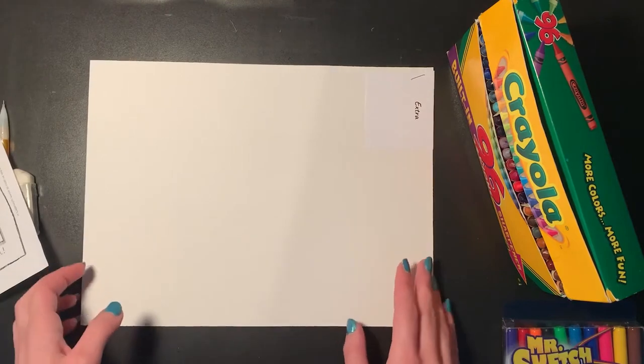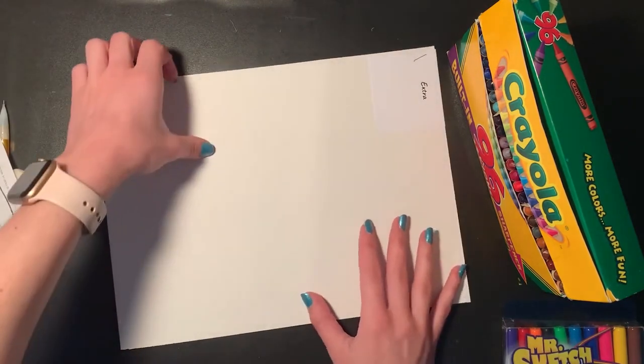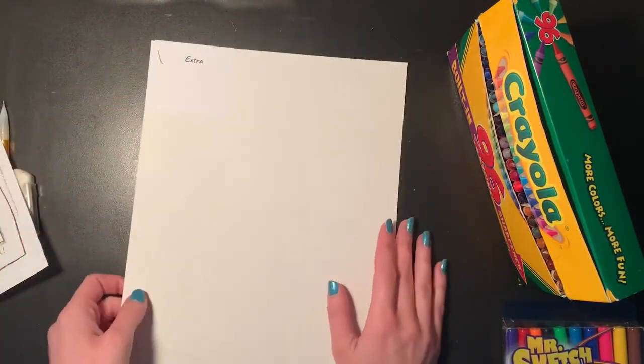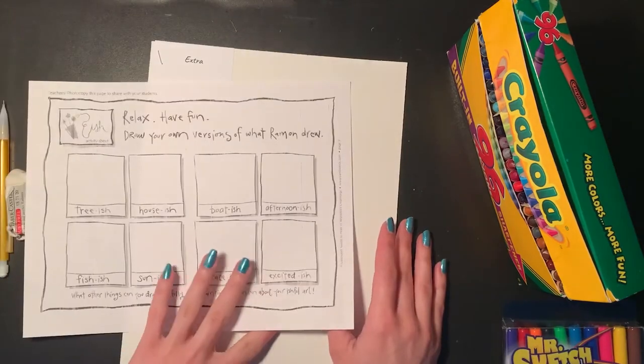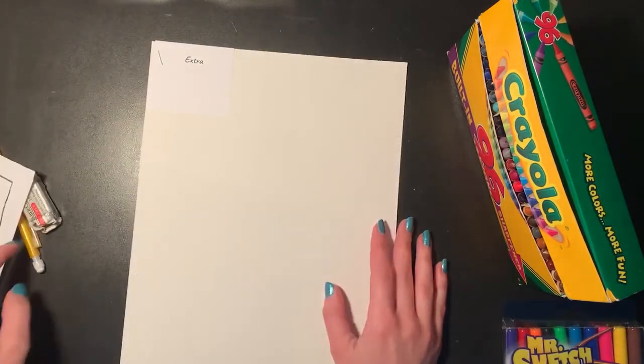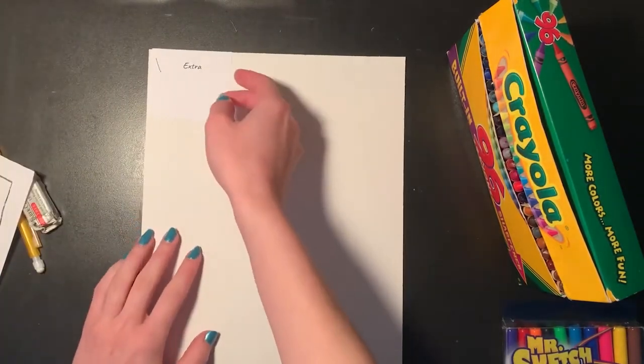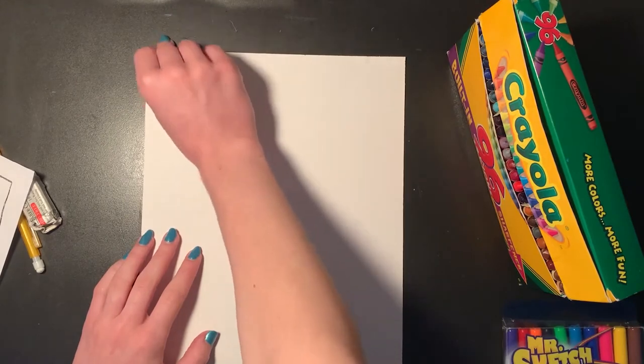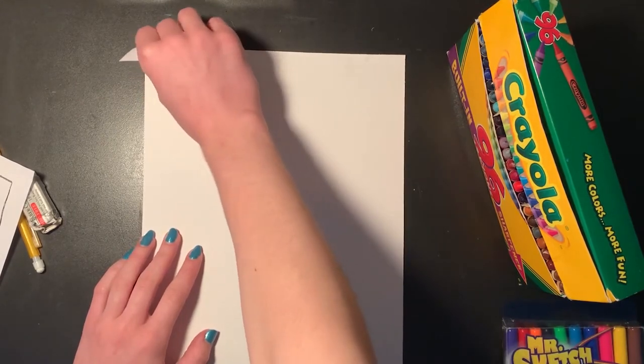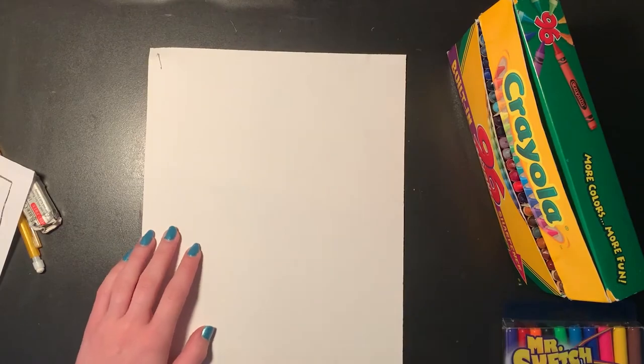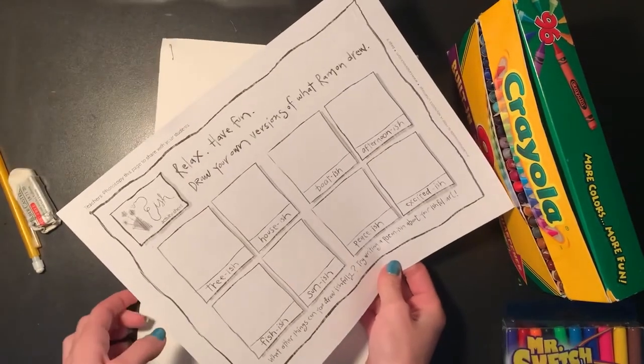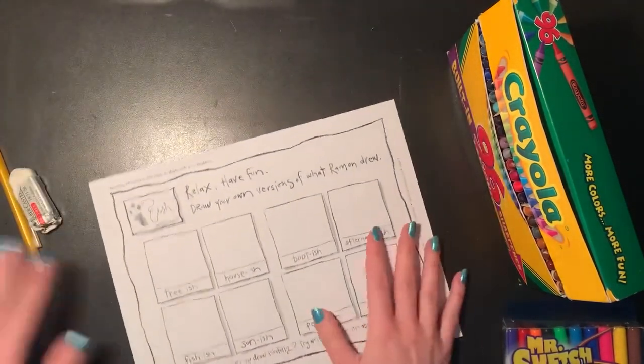And then I also have a plain white piece of paper that I am going to use later on to create a larger version of one of my ideas from our ideas sheet. I'm using the paper labeled extra from your art folder. If you don't have this paper at home, you can use any other white piece of paper. I'm going to start with my ideas sheet, so I'm going to put my white paper to the side.